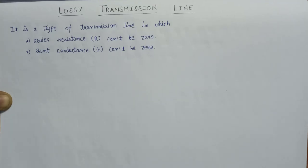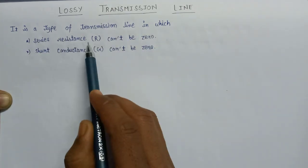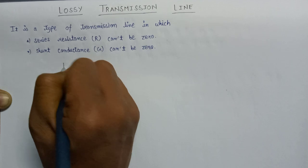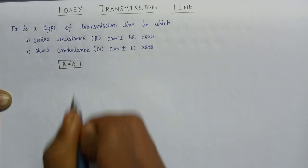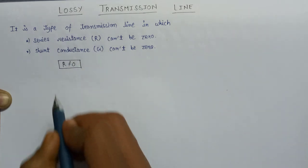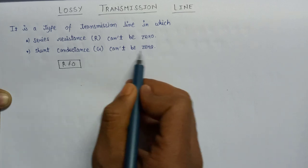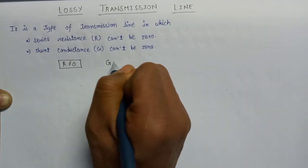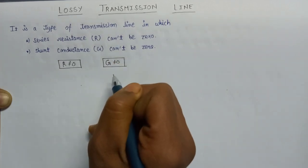Welcome all. In this lecture we are going to learn about lossy transmission line. It is a type of transmission line in which series resistance R cannot be equal to 0. This is the first condition for lossy transmission line. The second condition states that shunt conductance G also cannot be equal to 0. This is the second condition for lossy transmission line.